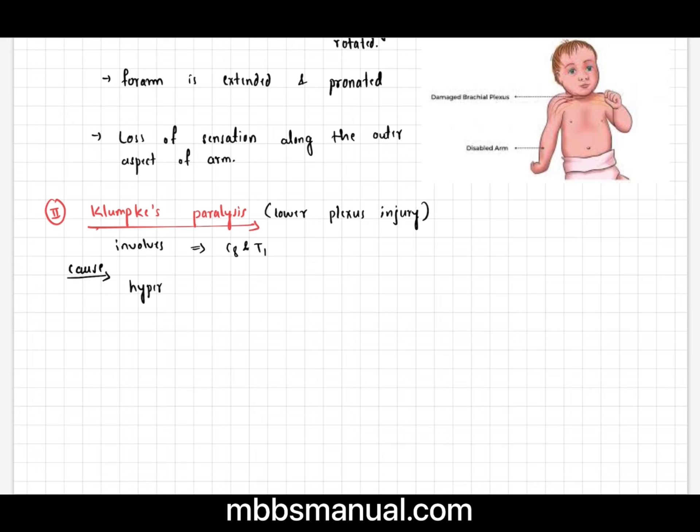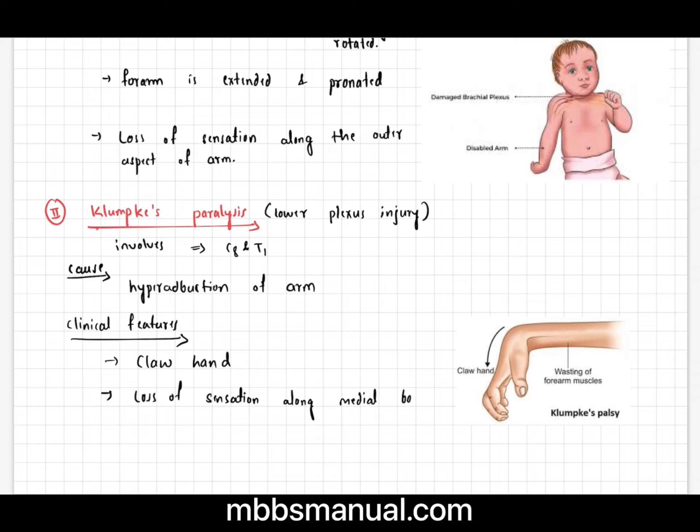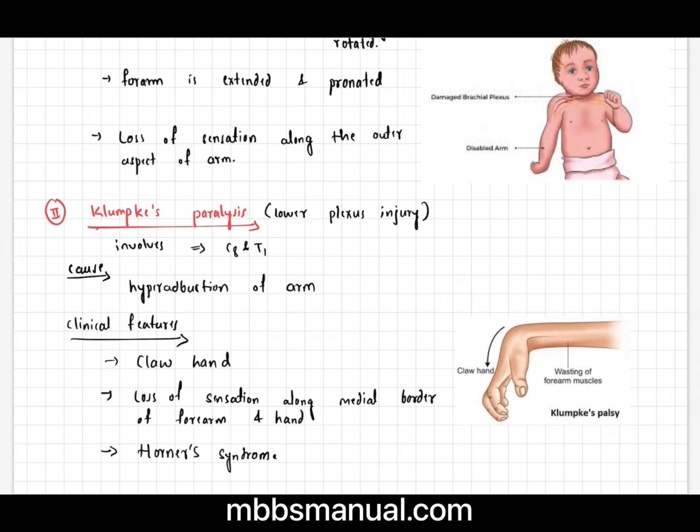Klumpke's paralysis involves C8 and T1 and mainly occurs due to hyperabduction of the arm. Clinical features include loss of sensation along the medial border of the forearm and hand, and Horner syndrome.